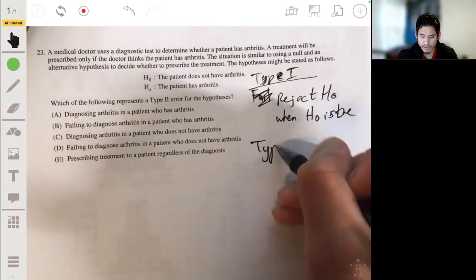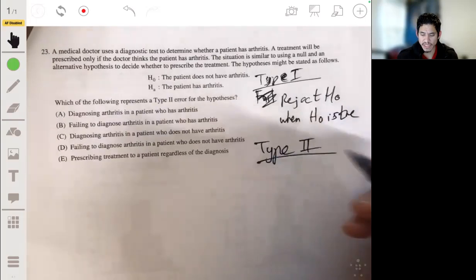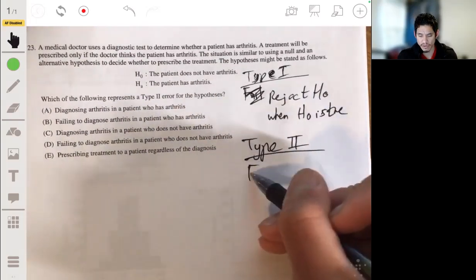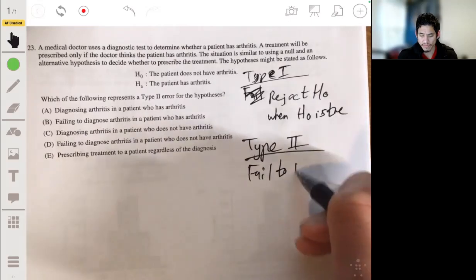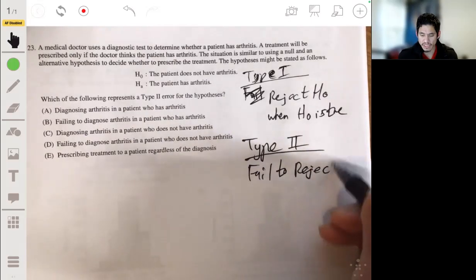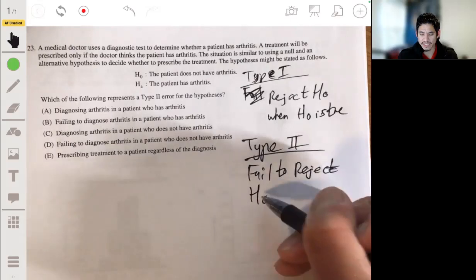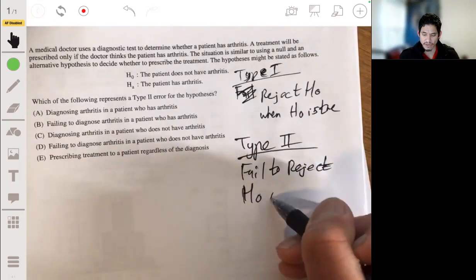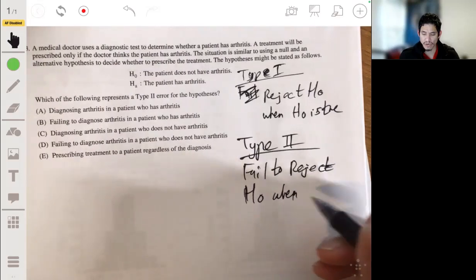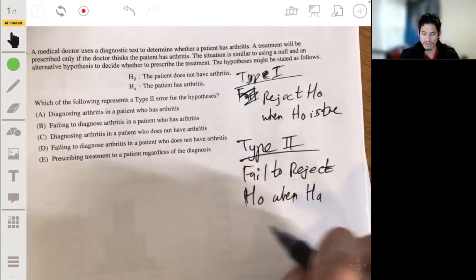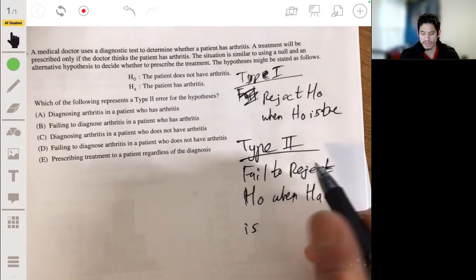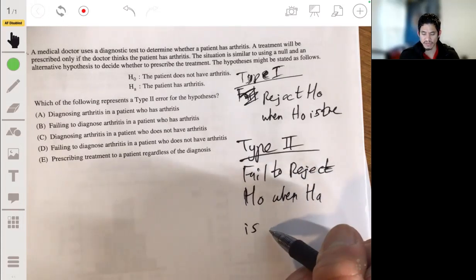A type 2, very similar, just remember the wording, you fail to reject H0. Failed to reject H0. And since this is an error, that means that the alternative is true. So you fail to reject H0 when the alternative is true. Because again, it's a mistake, an error. So you fail to reject the null hypothesis when the alternative is true.